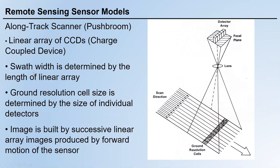There is no scanning mirror, and the swath width is determined by the length of the linear array. As you add more sensors to the array, the swath width increases; as you decrease the number of detectors, the swath width decreases. The ground resolution cell size is determined by the size of individual detectors.